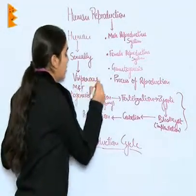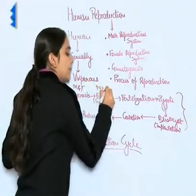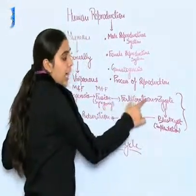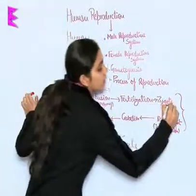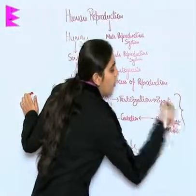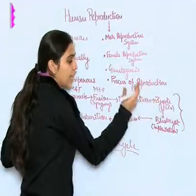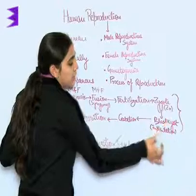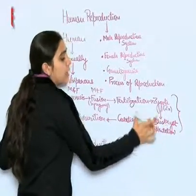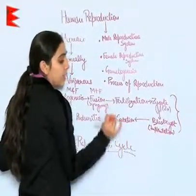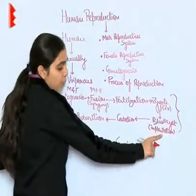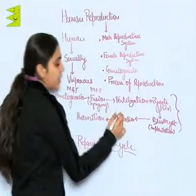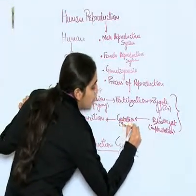The male and female gametes fuse in a process known as syngamy, leading to fertilization. After fertilization, a diploid (2n) zygote is formed. This zygote then differentiates and gives rise to a blastocyst, which enlarges and gets attached to the uterine wall in a process known as implantation.